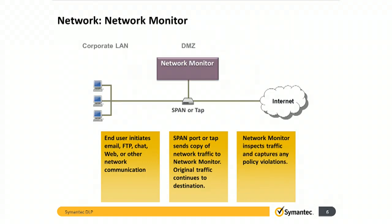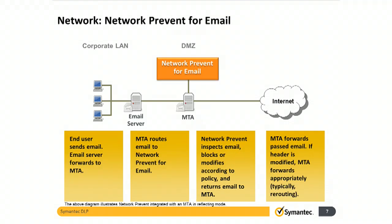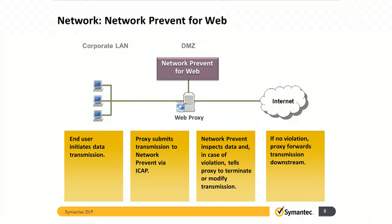Network monitor is a span or tap into the network that allows full line capture. Whenever a communication channel is opened up, network monitor inspects, captures, and reports on any DLP policy violations that may be contained in the data streams. The network prevent for email component integrates with SMTP compliant mail transfer agents to monitor SMTP traffic and then block or modify it for downstream processing. Network prevent for web integrates with web proxies to monitor HTTP, HTTPS, and FTP traffic and then terminate or modify it prior to downstream processing if a violation is detected.